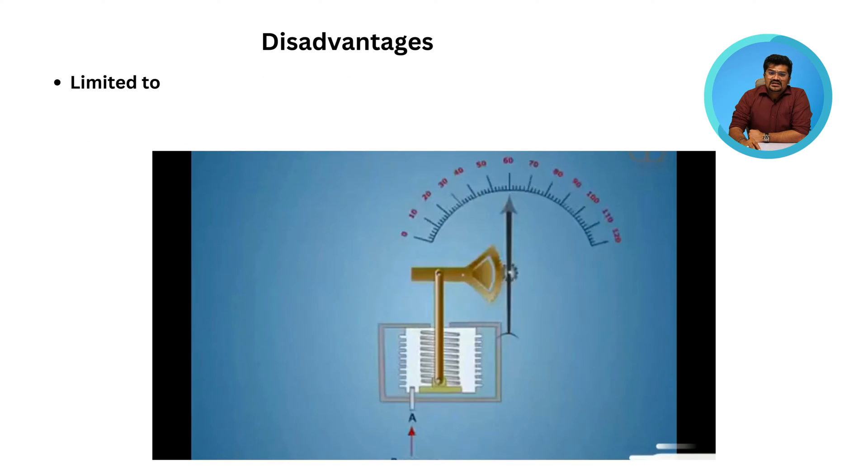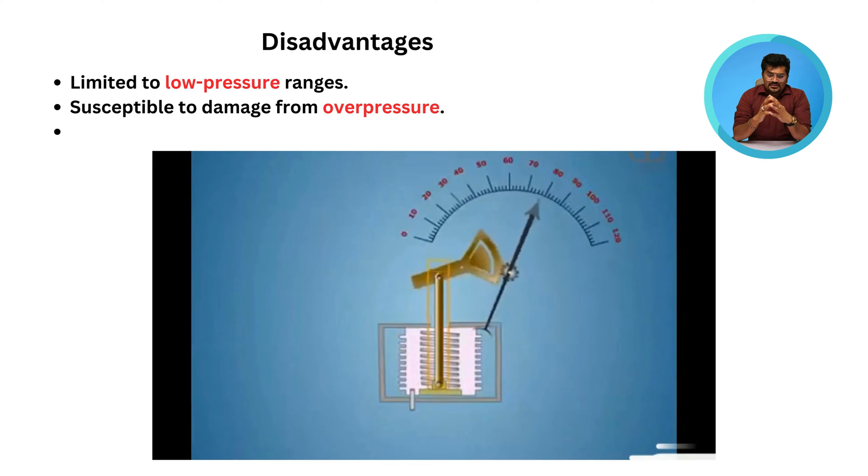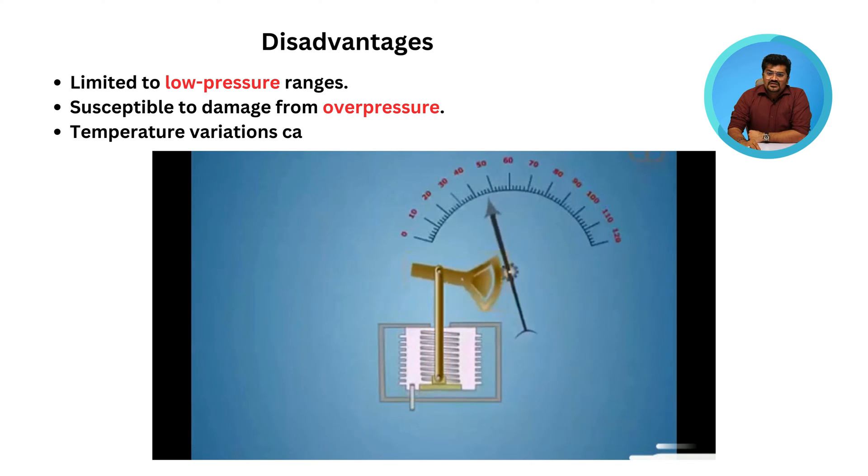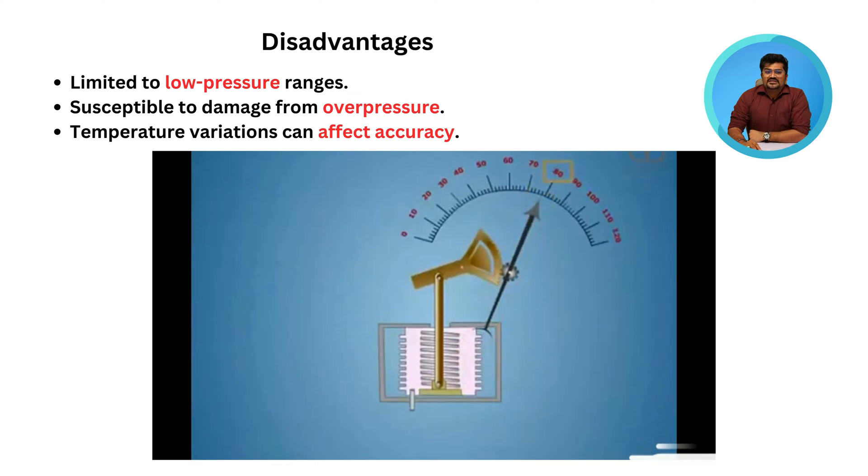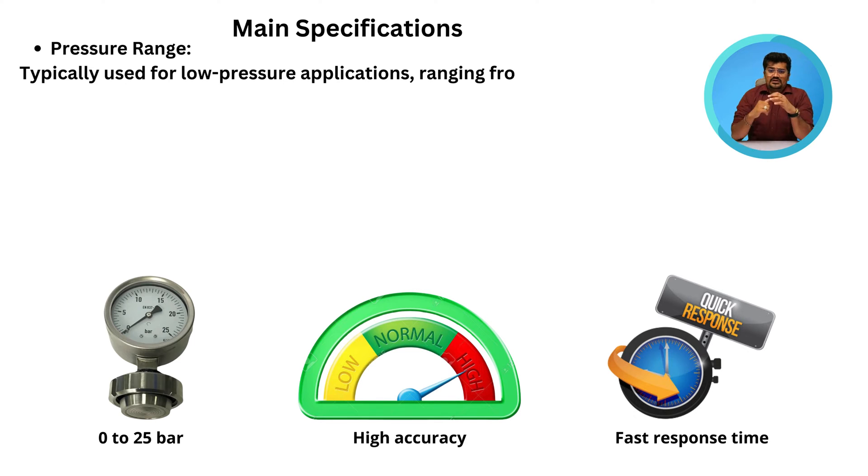Main disadvantages are limited pressure range, susceptibility to overpressure damage, and temperature variations affecting accuracy. The pressure range is typically 0 to 25 bar for low pressure applications.